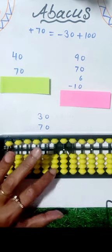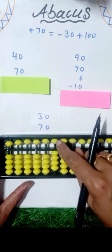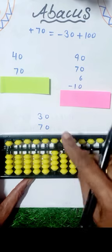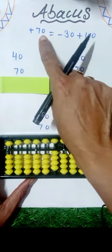First is 40 plus 70. Now we have 10s rod here, only 50 available here. That is why we will apply the formula to make 70.